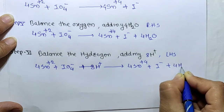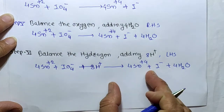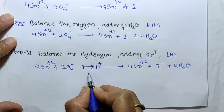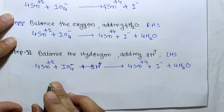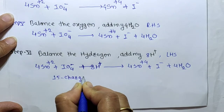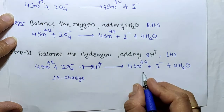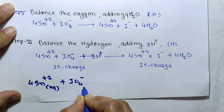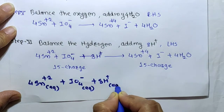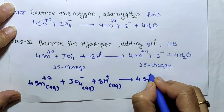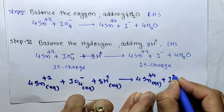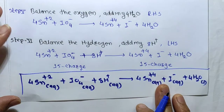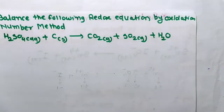Adding 8H⁺ to the left side gives: 8H⁺ + 4Sn²⁺ + IO₄⁻ → 4Sn⁴⁺ + I⁻ + 4H₂O. We verify charge balance: left side 8(+1) + 4(+2) + (−1) = 8 + 8 − 1 = +15; right side 4(+4) + (−1) = 16 − 1 = +15. Charges are balanced on both sides. This is the balanced redox reaction for example one.